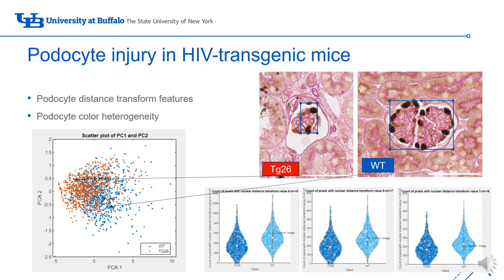Using Histolens, we are able to isolate several quantitative markers of podocyte injury that occur in HIV transgenic, or TG26, mice. These include several measures of podocyte distance transform. These features indicated that wild-type mice consistently have thicker, more uniformly shaped podocytes compared to TG26 podocytes, which take on a fractured appearance overall at higher levels of progression.